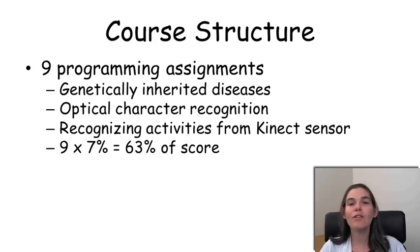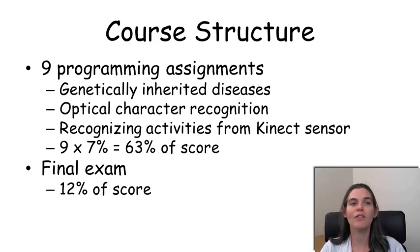So we're going to have, for example, a problem set on how you use probabilistic graphical models to understand the inheritance of genetically inherited diseases. We're going to have one that shows how you can look at a set of handwritten characters and read what's written there. And we're going to have one that allows you to look at a stream of output from a Kinect sensor that gives you both video and range data and recognize human activities. These nine programming assignments are each going to be worth 7% of the score for a total of 63%, which gives us 12% left for the final exam.